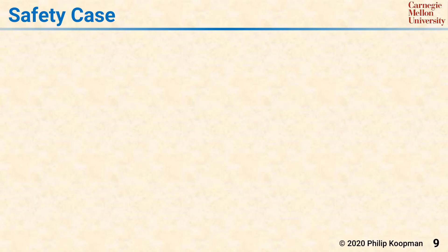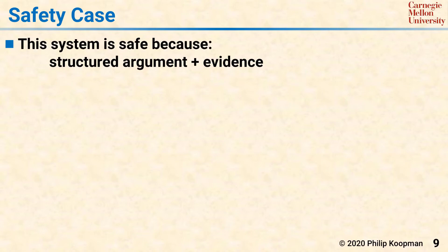The cycle of identifying hazards, grading safety goals, and mitigating risk results in a safety case being generated. The safety case demonstrates that a system must be safe because of a combination of a structured argument and evidence to support that argument. The argument can include use of design elements, use of rigorous engineering processes, and use of certified components in a system, among other things.